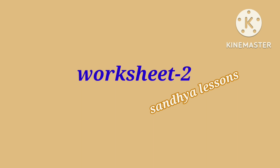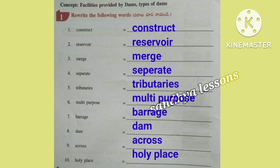Worksheet 2. First, rewrite the following words: Construct, Reservoir, Merge, Separate, Tributaries, Multipurpose, Barrage, Dam, Across, Holy Place.